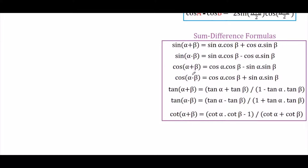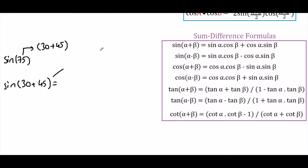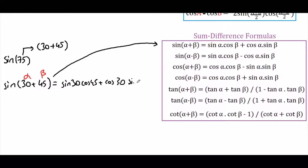I want to give one example here and then go back to our integral. Let's say you have sine of 75. You can break 75 into 30 plus 45. So sine of 30 plus 45 will be as shown in line 1. In our case, 30 is our alpha and 45 is our beta. So it equals sine of 30 times cosine of 45 plus cosine of 30 times sine of 45.